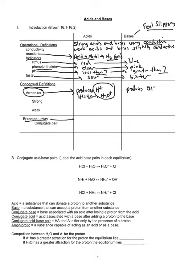In the Bronsted-Lowry definition, an acid is a substance that donates hydrogen ions in a reaction — it's the substance that donates the H⁺. The base is the substance that accepts the H⁺, or the hydrogen ion, in the reaction. It's really a tug of war between the hydrogen ion — the substance that donates it is the acid, the substance that accepts it is the base.